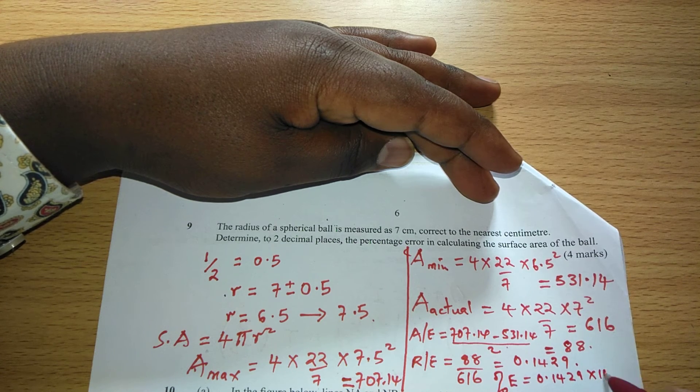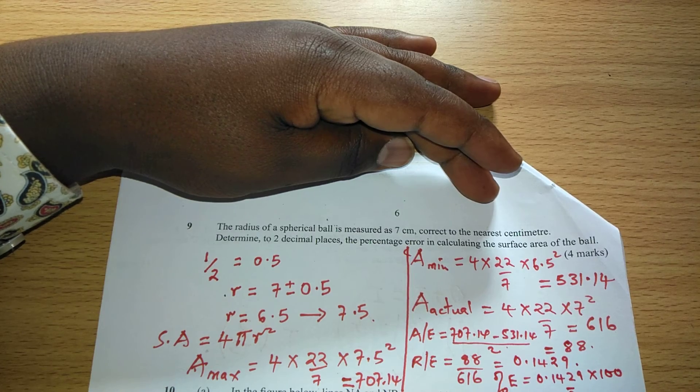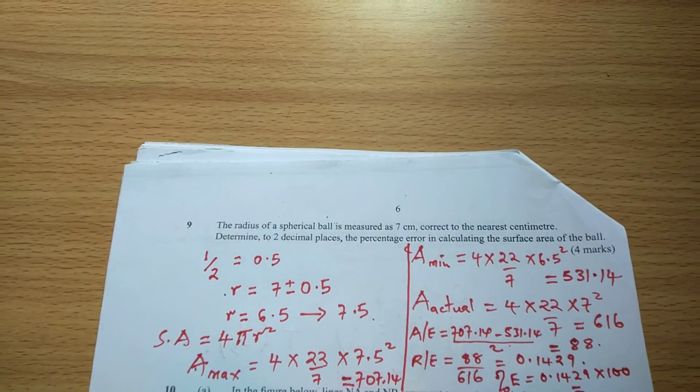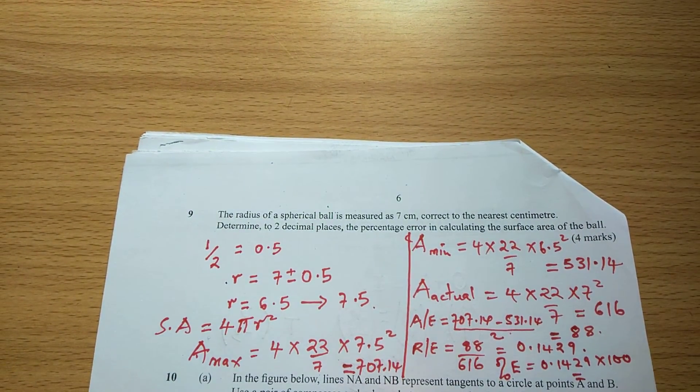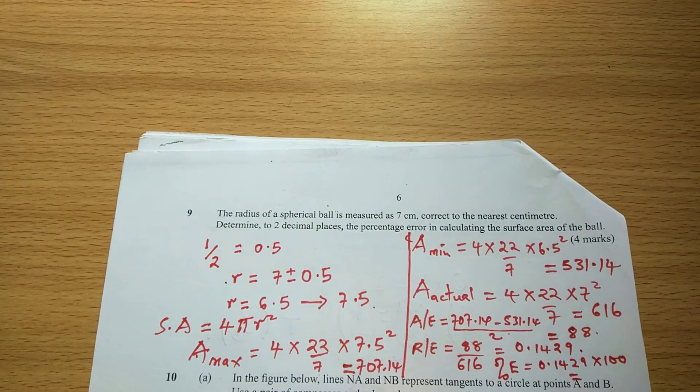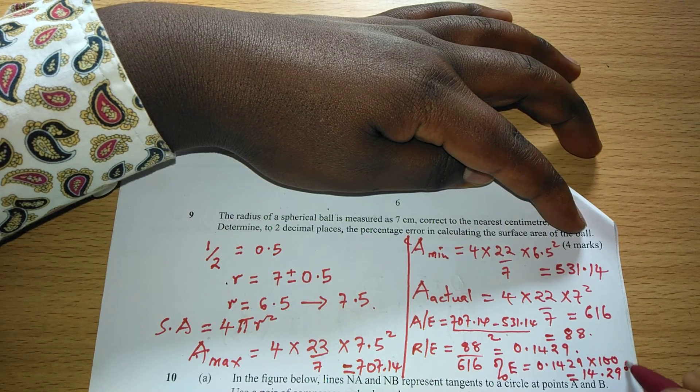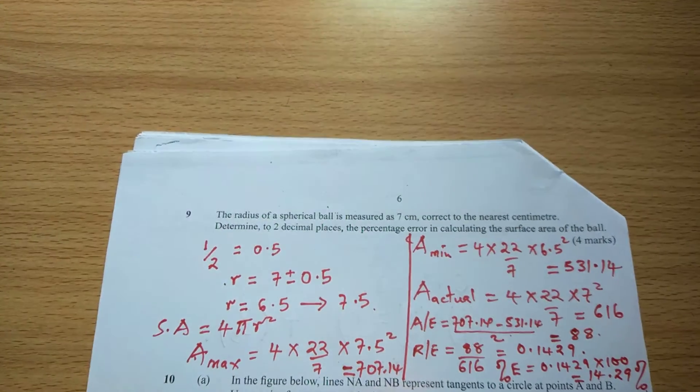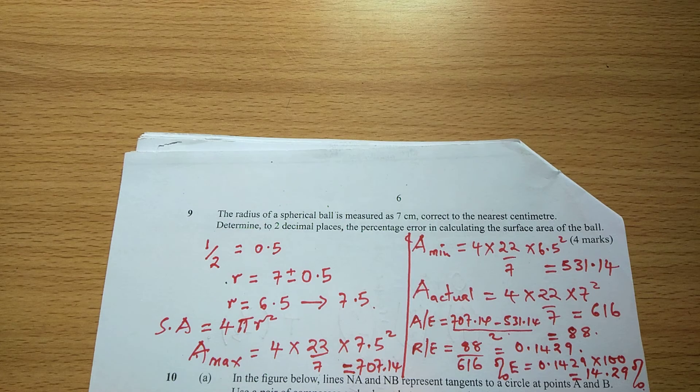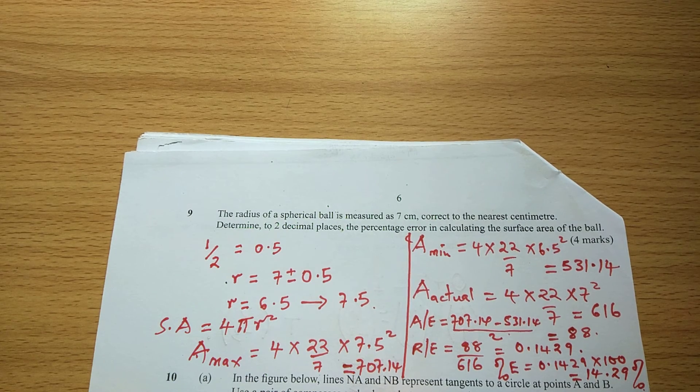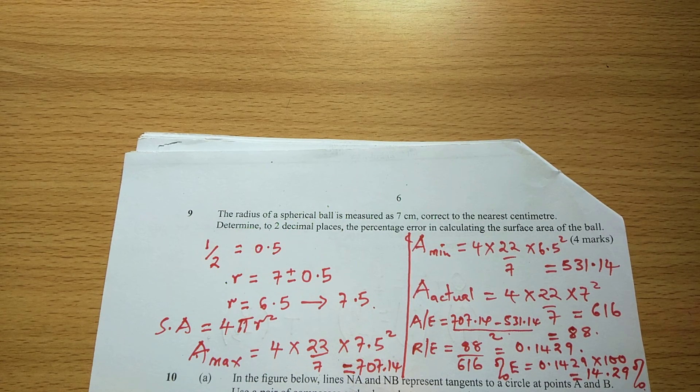And we multiply it by 100%. So the error when multiplied by 100 will become 14.29%, 14.29 percent. So the percentage error is 14.29. That is how we get percentage error in the calculation of area.